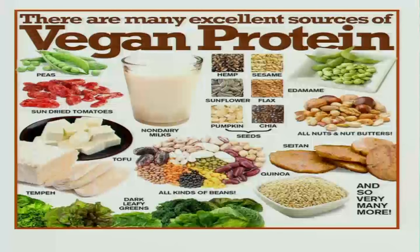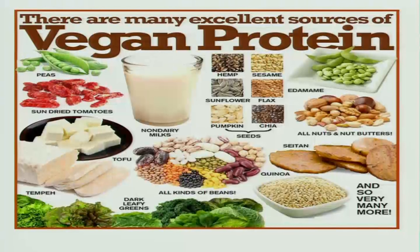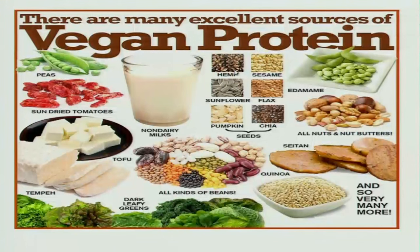There are many excellent sources of vegetarian protein: milk, paneer, and cheese. When you combine cereals and pulses, beans, flaxseed, pumpkin seeds, sunflower seeds, and hemp seeds — all these are good vegetarian protein sources.